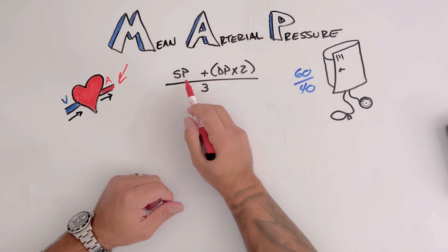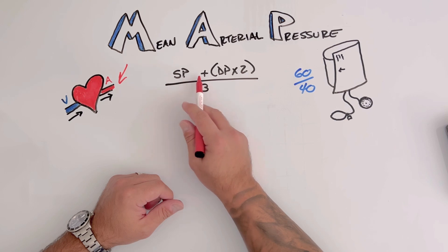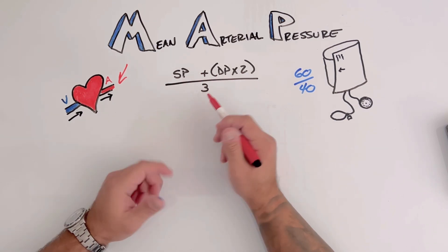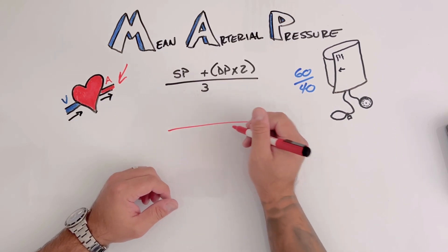So this equation is going to be our systolic pressure plus two times the diastolic pressure divided by three. Super simple. So let's plug it in.